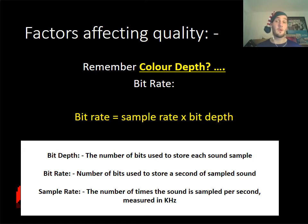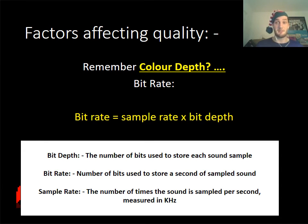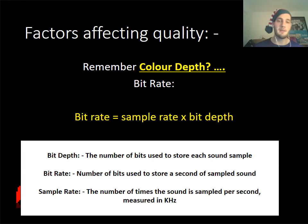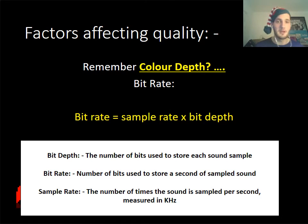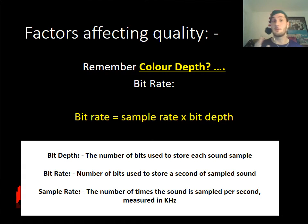Thinking back to color depth — the number of bits used per pixel — it's similar when talking about sound. You need to know what bit rate is. Bit rate is the number of samples taken — the thousands of samples — multiplied by the bit depth, which is the number of bits used per sample. So if you're using 8 bits per sample, you multiply 8 by the sample rate. If you decide to use 16 bits, you're going to have an even bigger file size. These are the types of things you need to be able to comment on in your exam.